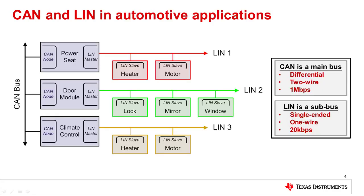In today's automobiles, CAN is the main bus that connects multiple nodes throughout the vehicle. It's a differential two-wire interface. Classic CAN operates up to 1 megabit per second, and CAN FD operates up to 5 megabits per second. LIN is a subbus — a single-ended, one-wire interface that communicates at 20 kilobits per second.